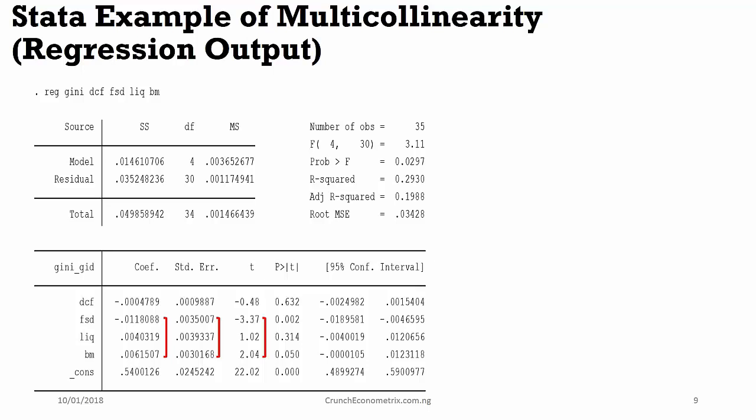Looking at the standard errors again, you will observe that the standard errors are larger. They are 4 times the size of that of domestic credit standard error. In this case, our t-statistics, we only have one very low t-ratio at 1.02. We are fortunate to have two t-ratios that are high.